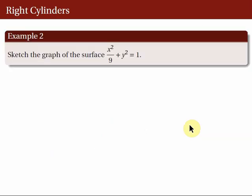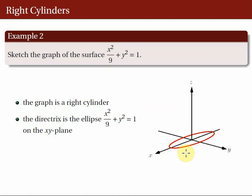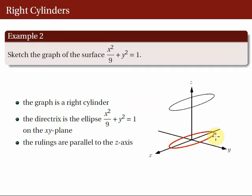Let's consider the following examples. First, sketch the graph of the surface x²/9 + y² = 1. We know immediately that this is a right cylinder because of the missing z variable. To sketch the graph of this cylinder, we begin by sketching the graph of this equation on the xy-plane. The graph of this equation is an ellipse. So here's the graph of the ellipse on the xy-plane. To draw the graph of the cylinder, we translate the generating curve along the axis of the missing variable, which is the z-axis. Then we draw the rulings which are parallel to the z-axis. So here's the graph of the cylinder.